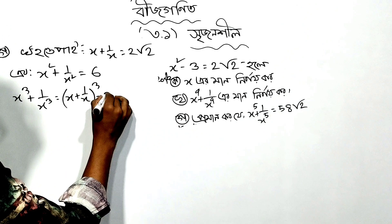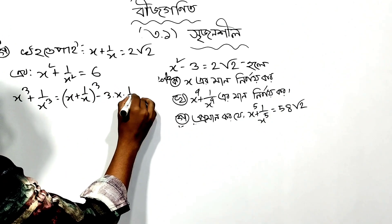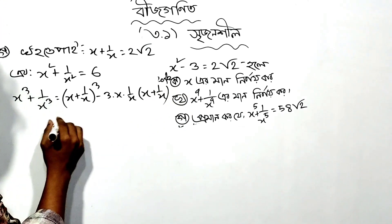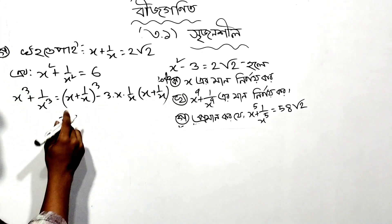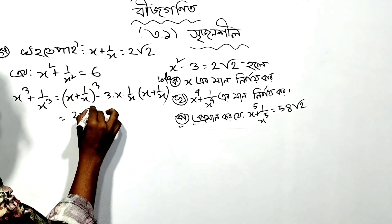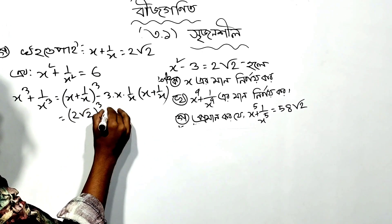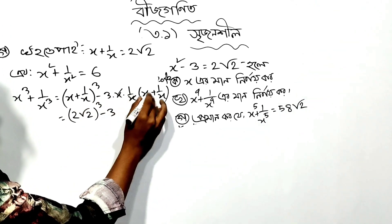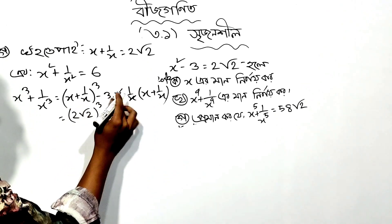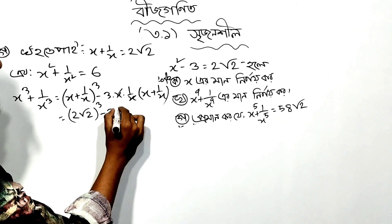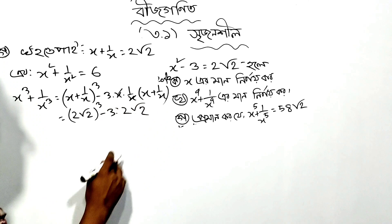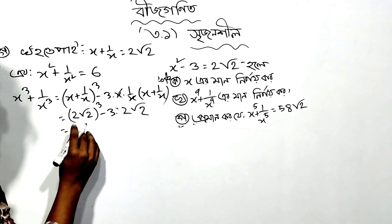Using the identity: the whole cube minus 3ab times a plus b equals a cubed plus b cubed. So 2x plus 1 by x equals 2 root 2. This gives us 2 root 2 as the value. Let's take a to the power 3.